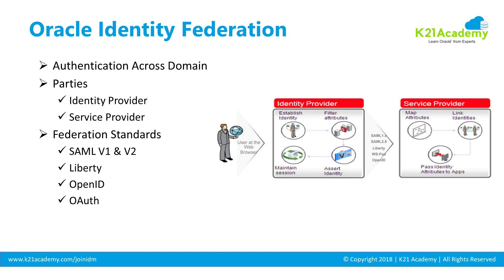The identity provider is the enterprise, domain, or company where users reside. The service provider is the organization that provides the service. For example, your company is the identity provider because you are going to use the service provider's service. Your company has a tie-up with Salesforce, Oracle Fusion Cloud, or Oracle Financial Cloud — those are the service providers. Cross-domain single sign-on between these two parties is called Federation.